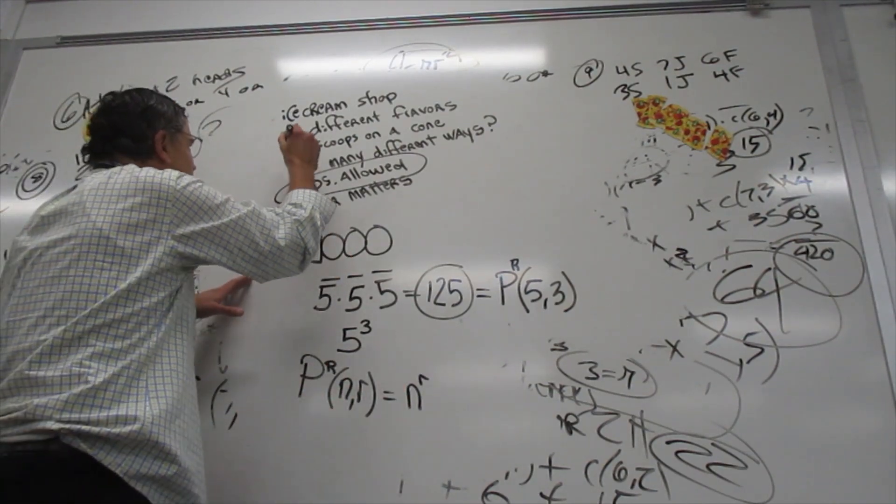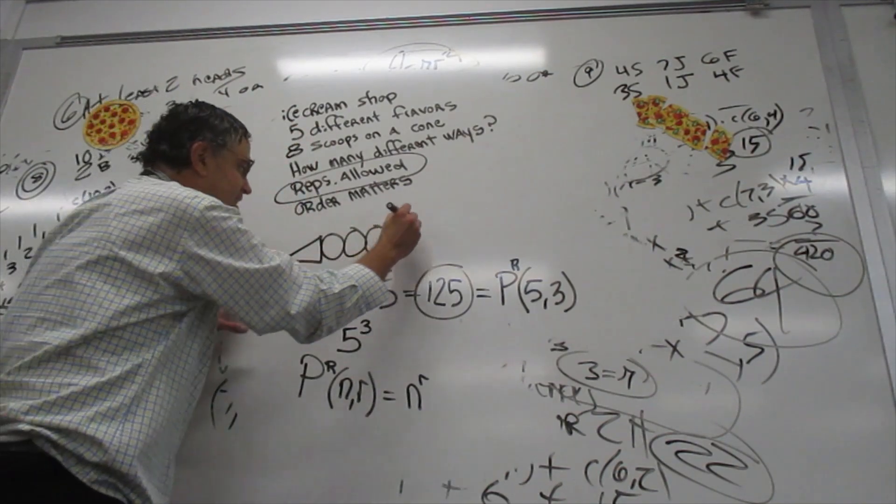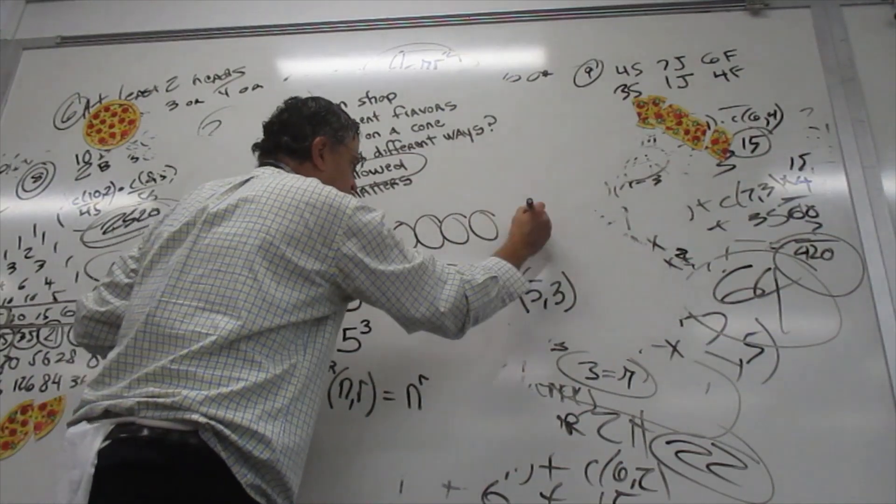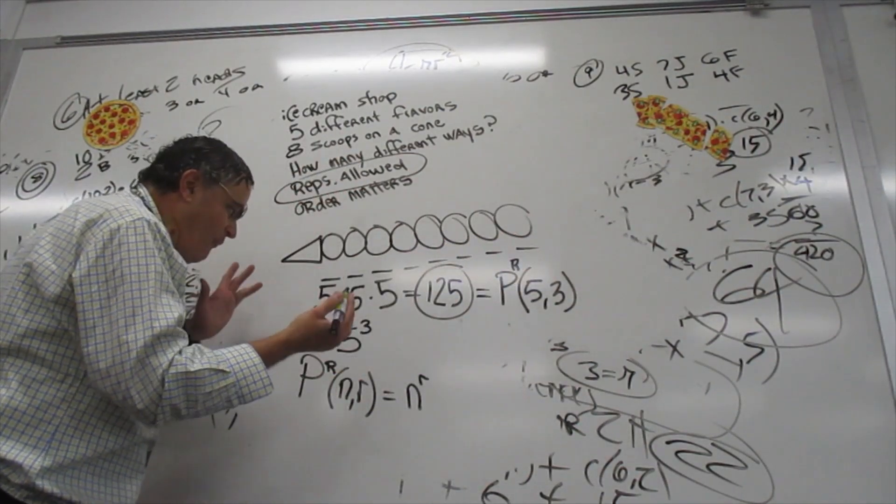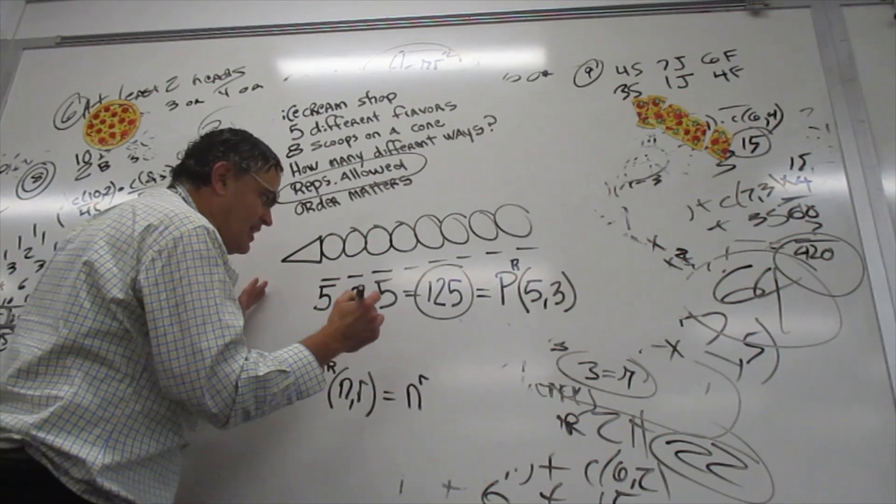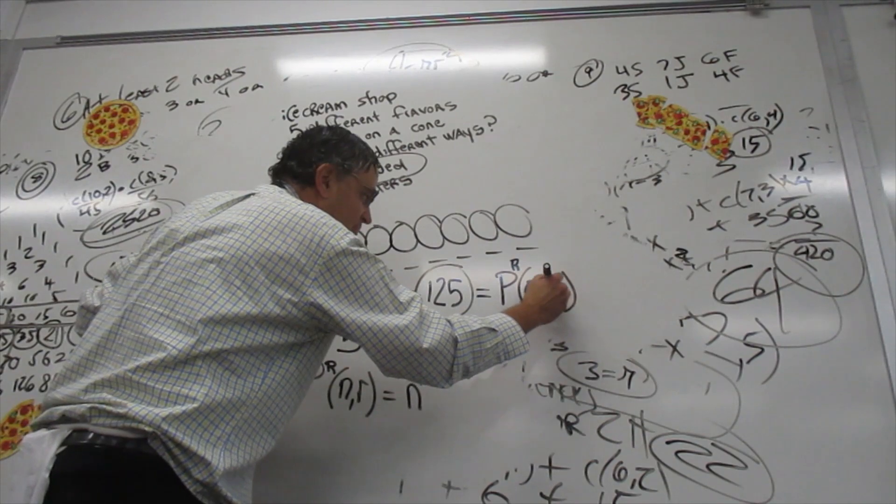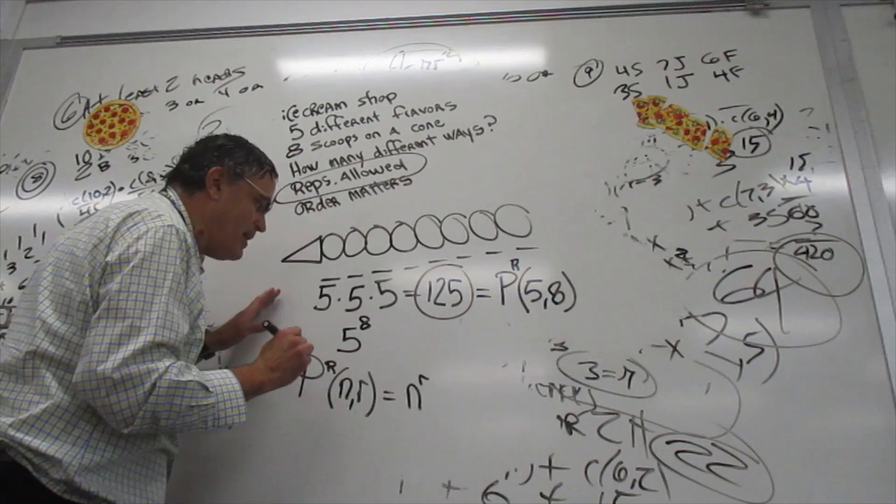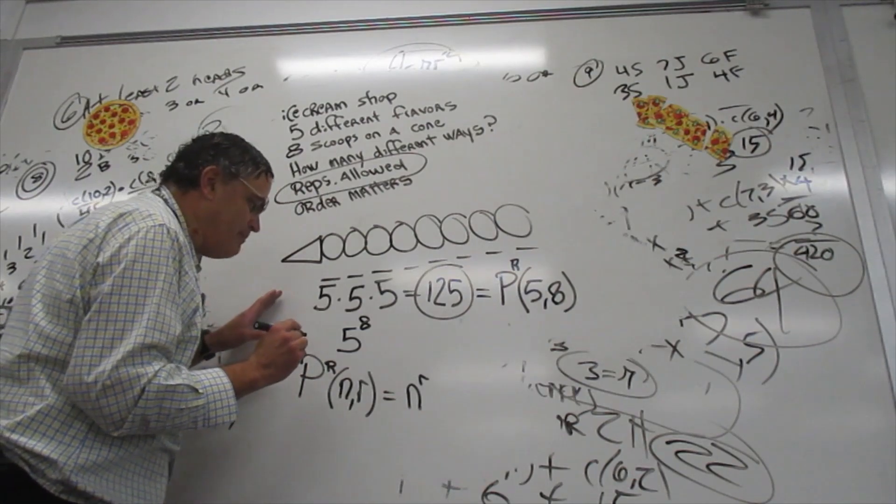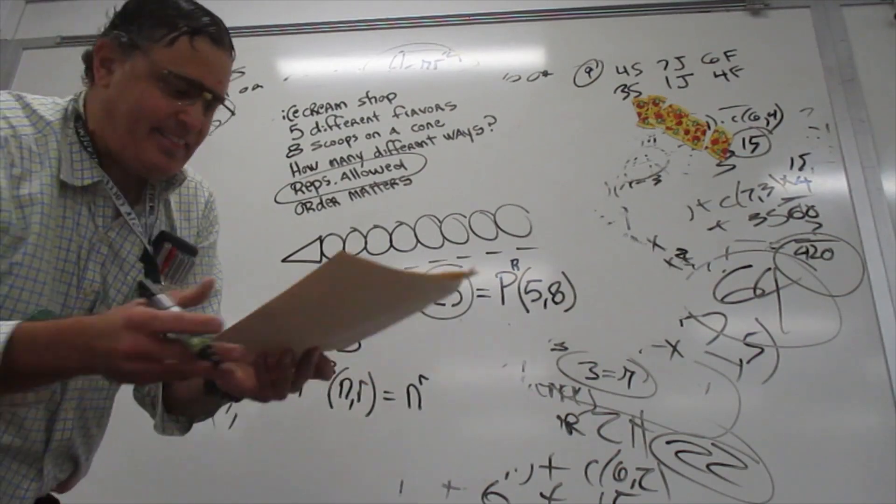So if we switch this to eight scoops on a cone, well, then you're going to have more slots. And what you'll have here is instead of the three, you'll have an eight. So this is five to the eighth power. Five to the eighth power is a big number. I did that earlier. It's 390,625.